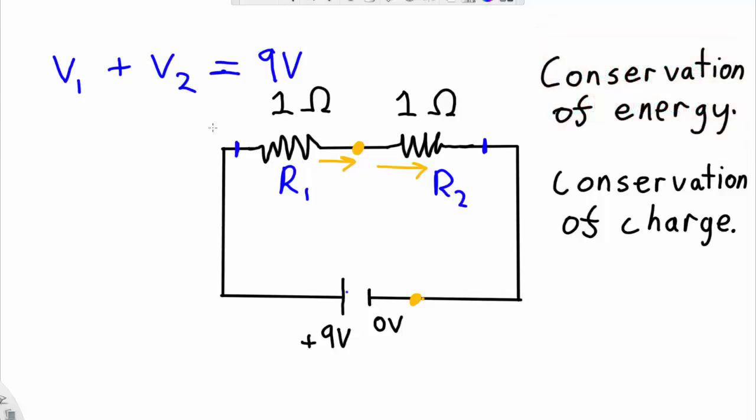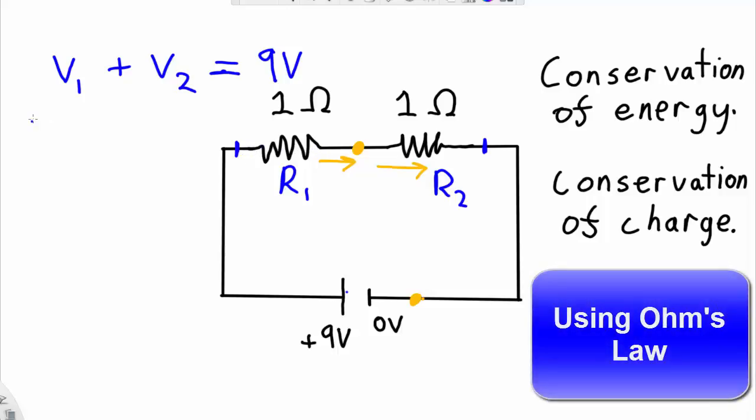And I also know from Ohm's law that the voltage across one of these resistors is going to be equal to the current times the resistance. So in this case, I would have V1 = I1*R1 and V2 = I2*R2.